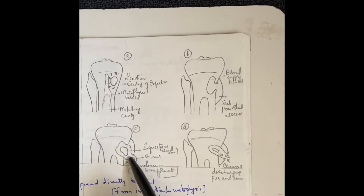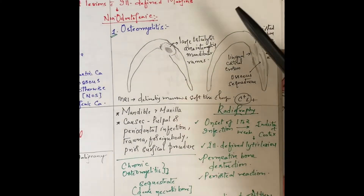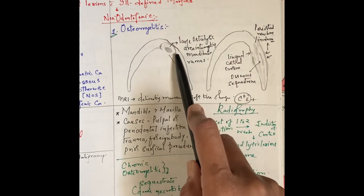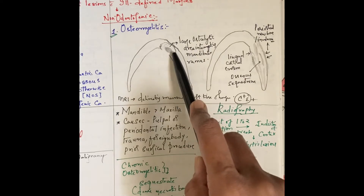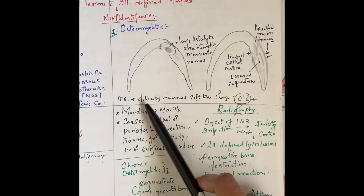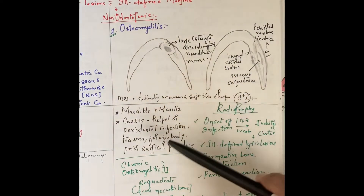Once the pus builds up, the surrounding tissue weakens and there will be cortical breach leading to discharge of pus and bone through an opening known as cloaca. In this example of osteomyelitis of the jaw, you can see a large osteolytic area interrupting the mandibular ramus, a periosteal new bone — that is the surrounding involucrum — a dead bone that is the osteosequestrum, and lingual cortical erosion.